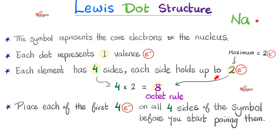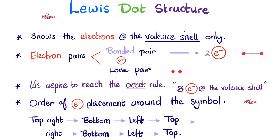Four sides times two electrons each means the maximum is eight — that's the octet rule. Place each of the first four electrons on all four sides of the symbol before you start pairing them. Take neon, element number 10: it has 8 valence electrons. Do not stack them all on one side. You go one, two, three, four — one on each side first — then pair them up: five, six, seven, eight. The Lewis dot structure shows only the valence shell electrons; everything else is included in the element symbol.